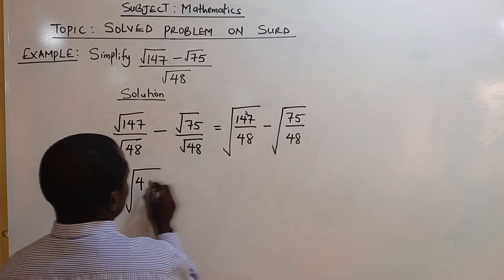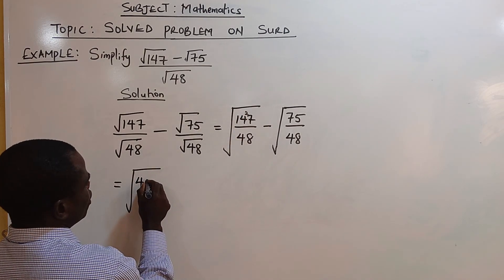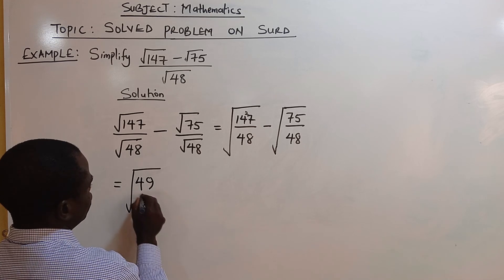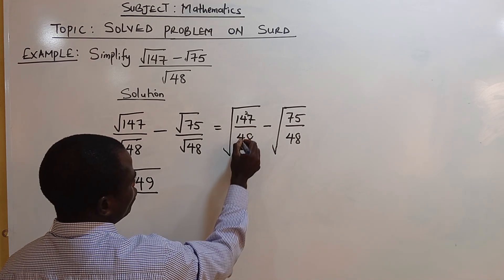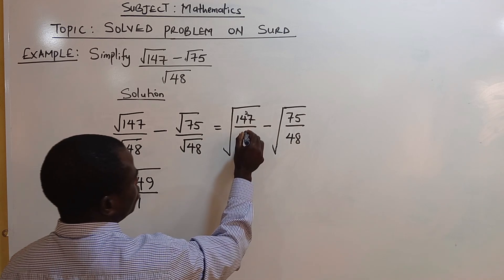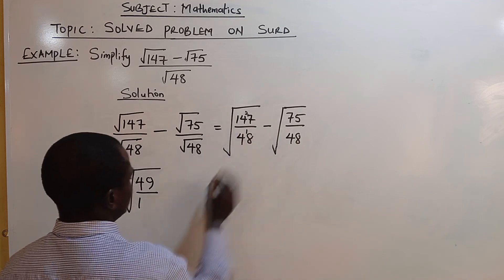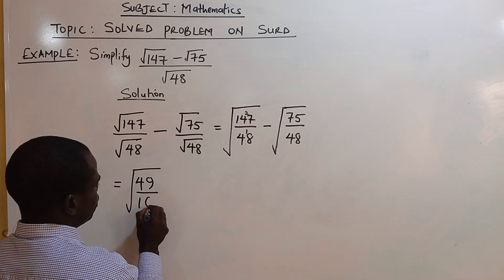3 goes into 27, that is 9. 3 goes into 48, that's 1 remainder 1. 3 goes into 18, 2 times 6 is 18.